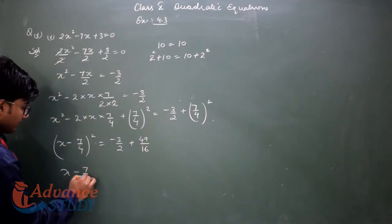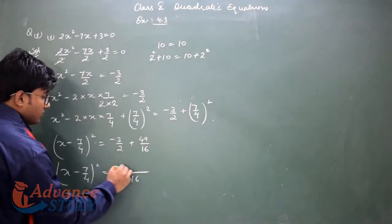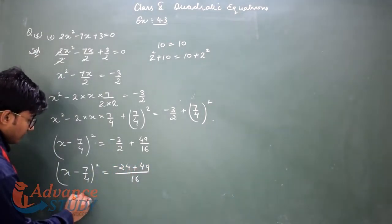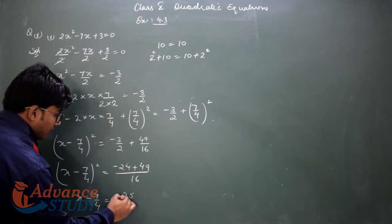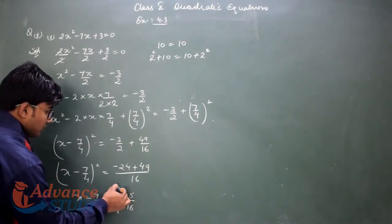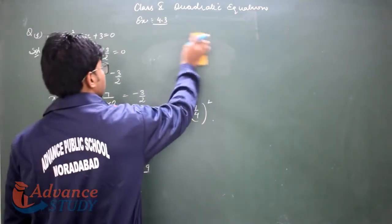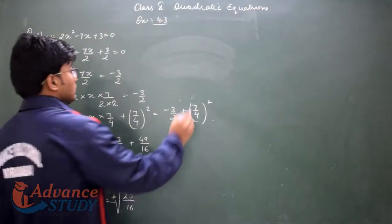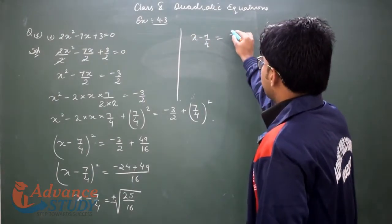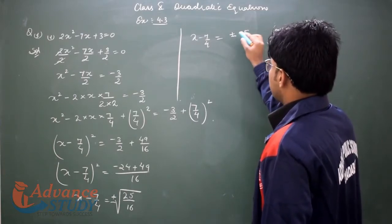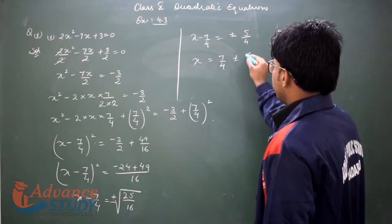We take LCM which is 16. 8 times 3 is 24, so minus 24 plus 49. So x minus 7 upon 4 is equal to — the answer is 25, giving us 25 upon 16. Taking square root, we apply plus minus. So x minus 7 upon 4 equals plus minus 5 upon 4 — since 25 is 5 squared and 16 is 4 squared.